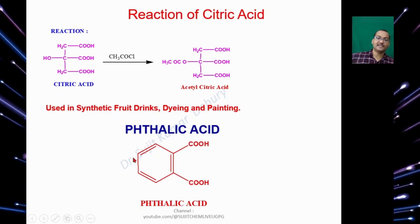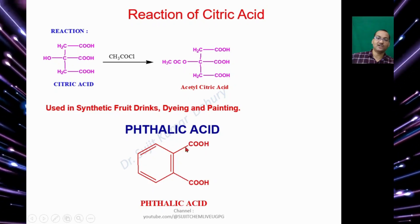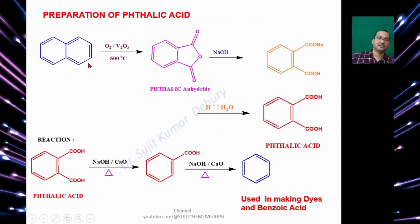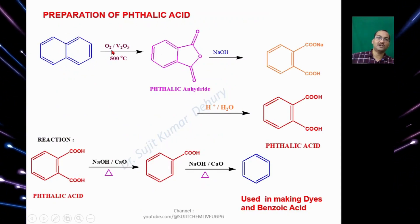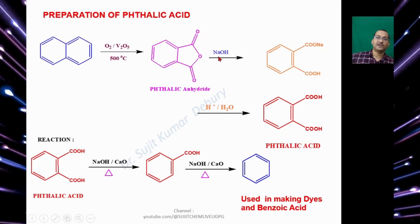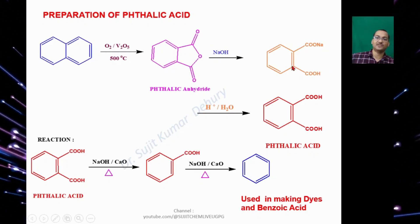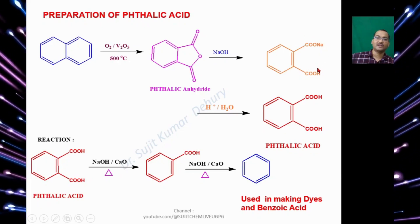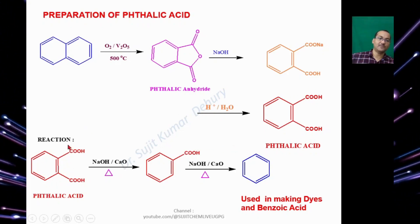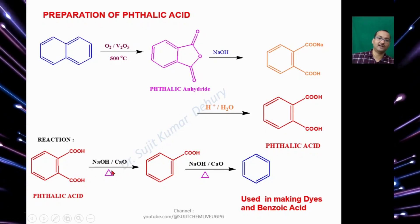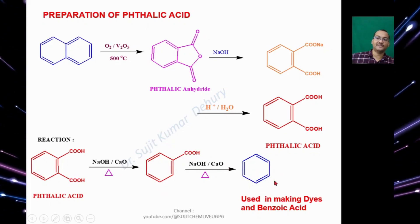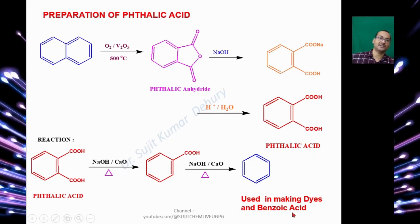Phthalic Acid is an aromatic acid where two carboxylic acid groups are in the ortho position. To prepare: Naphthalene treated with oxygen and Vanadium Pentoxide at 500°C gives Phthalic Anhydride, which reacts with Sodium Hydroxide to give the sodium salt, and hydrolysis gives Phthalic Acid. Phthalic Acid reacting with Sodalime (NaOH + CaO, heat) gives Benzoic Acid, and further Sodalime treatment gives Benzene. It is used in making dyes and Benzoic Acid.